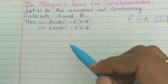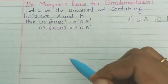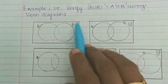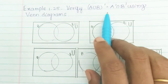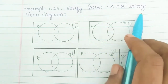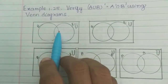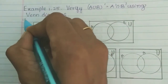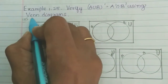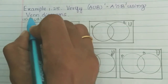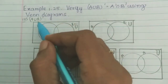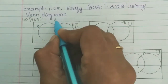So A union B the whole dash is equal to A dash intersection B dash. Then A intersection B the whole dash is equal to A dash union B dash. We have a Venn diagram to use and verify. So A union B the whole dash is equal to A dash intersection B dash — Venn diagram use and verify. That is right hand side is equal to left hand side. Left hand side is equal to A union B the whole dash.